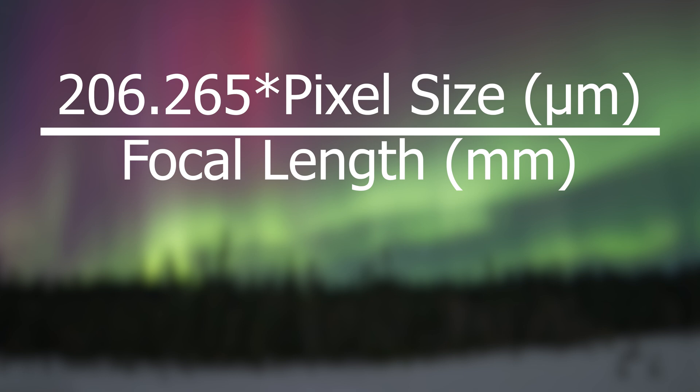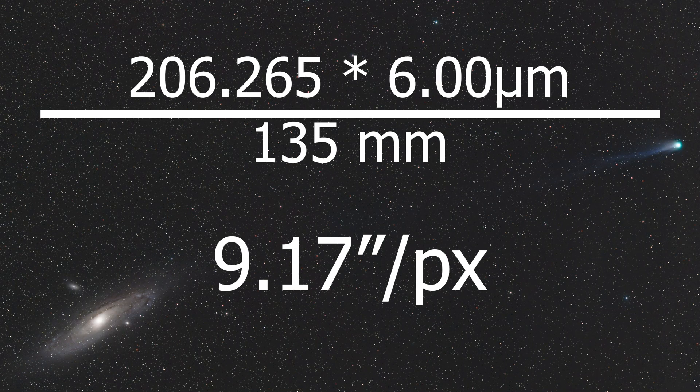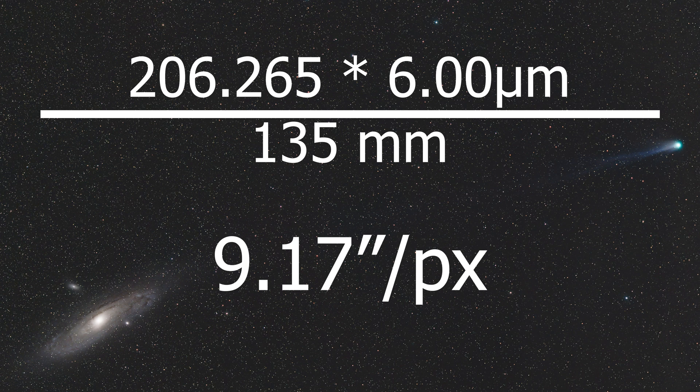Calculating your exact image scale is easy: use the formula 206 times the pixel size in microns, divided by the focal length of your telescope or lens. For example, my main rig: 206 times 3.76 micron pixels divided by 480 millimeter focal length gives an image scale of 1.62 arc seconds per pixel. My wide-field rig: 206 times 6 micron pixels divided by my 135 millimeter Rokinon lens gives 9.17 arc seconds per pixel.